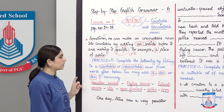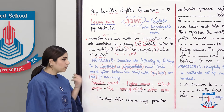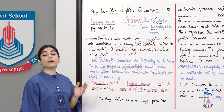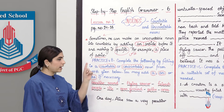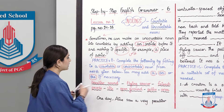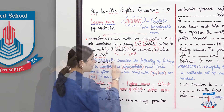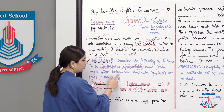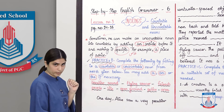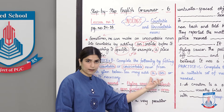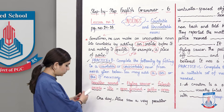Now keeping this in mind, we will solve the next exercises. Note that in your book, the practice exercises are given in a different order — for example, Practice B comes first. I have solved them in the same order as given in your book. Practice B: complete the following by filling in a countable noun or uncountable noun from the words given below. You may add 'a' and 'the' if necessary.